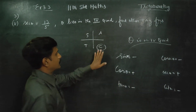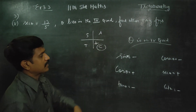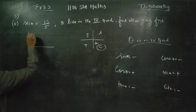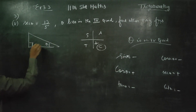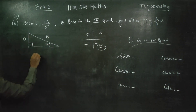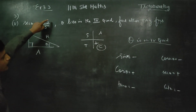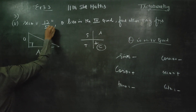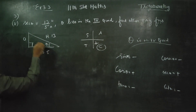Cos and secant are positive, while the others are negative. Secant theta equals hypotenuse by adjacent. Here, hypotenuse is 13 and adjacent is 5.